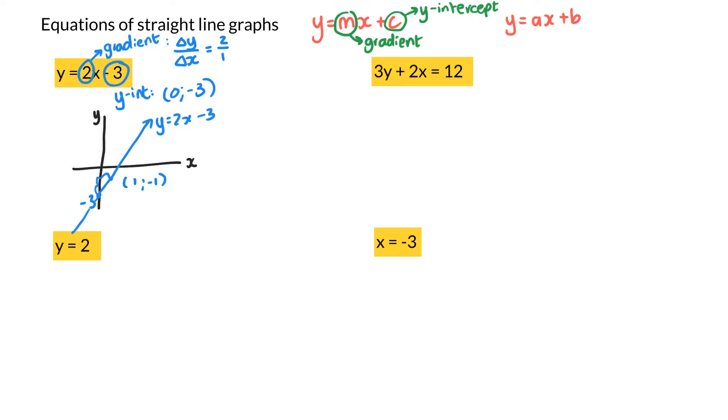Now let's look at the equation on the right of the first one. I've got 3y plus 2x equals 12. Now that is a straight line graph, but it's not in standard form. So I can't easily see my gradient or my y-intercept. So let's rearrange the way it's written. So I have 3y equals negative 2x plus 12. And now I'll divide each term by 3.